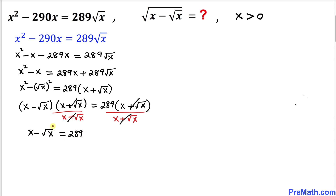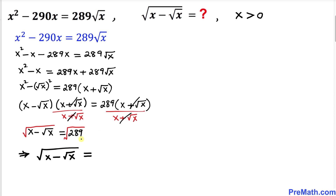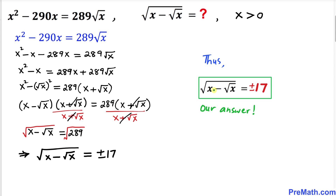In this next step let's take the square root of both sides. The left hand side becomes square root of x minus square root of x, and on the right hand side square root of 289 could be written as positive or negative 17. So the value of x minus square root of x turns out to be positive or negative 17, and that's our final answer.